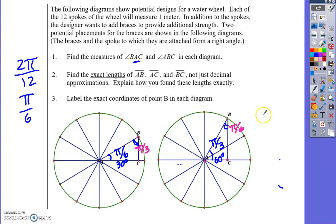For question number two, find the exact lengths, not just decimal approximations. These are the same triangle, they're just oriented differently. This angle is 60 degrees.